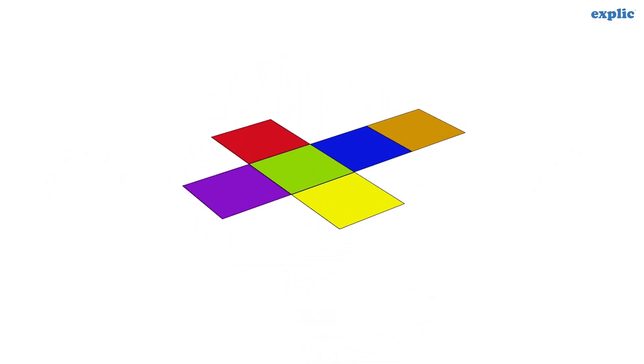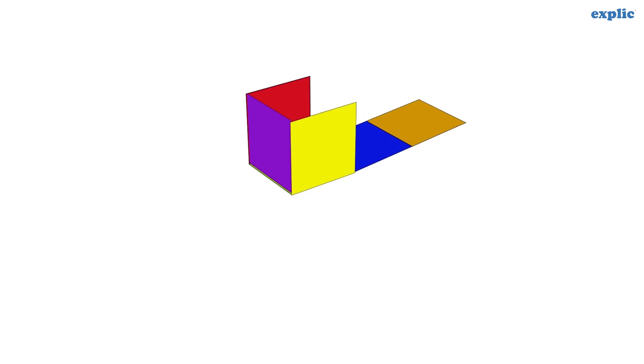The simplest regular polyhedron is cube. Cube is made of six squares which are regular polygons. Also, three faces meet at each vertex of the cube.